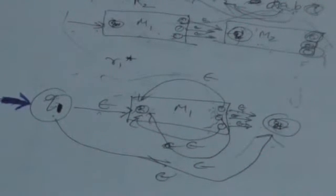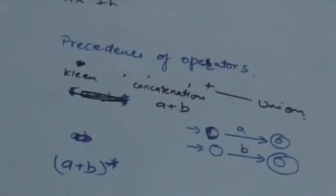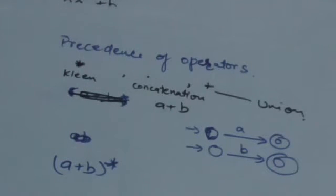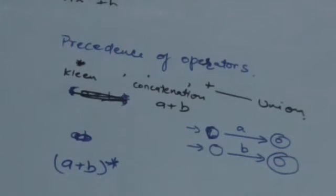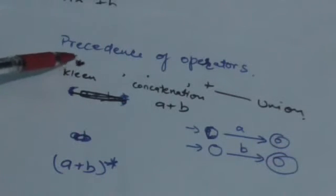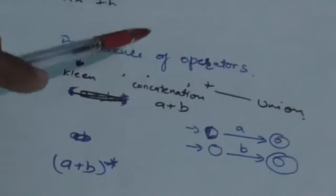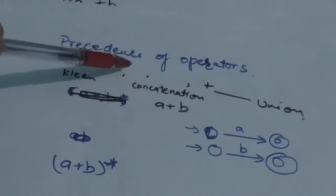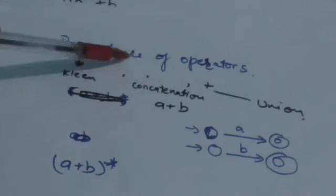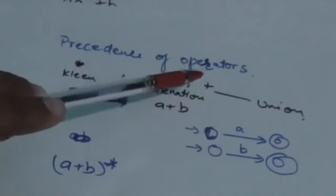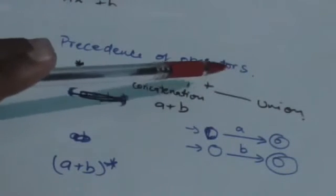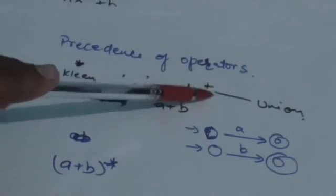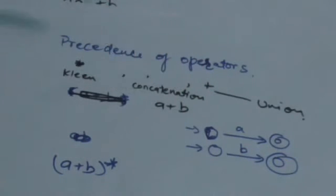Now, regular expressions use three operators: Kleene star, dot, and plus. The precedence of the Kleene star operator is highest. Then comes the dot operator, which represents concatenation — its precedence is second. The plus operator, which represents the union operation, has the lowest precedence among all three operators.